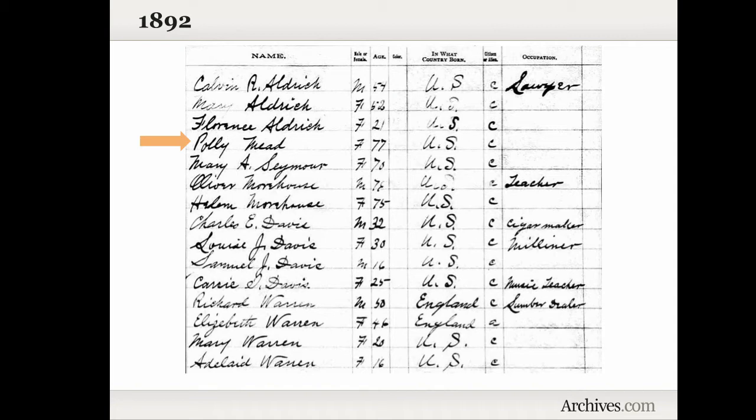But we can use the 1892 Census to put these people in a specific place at a specific time. We can also get information about their age, we can see what country they were born in, their race, and their occupation.